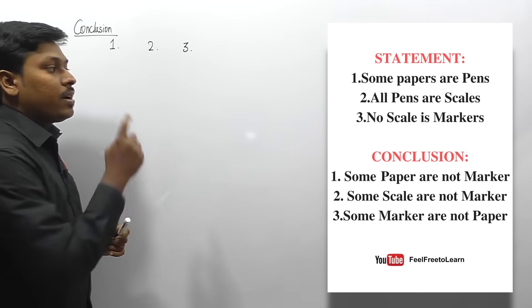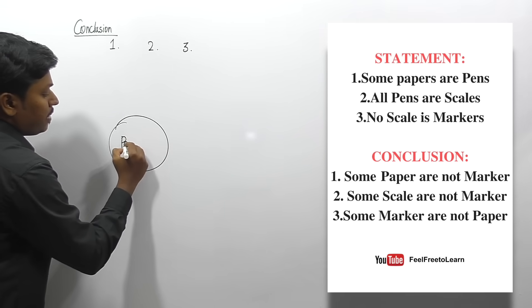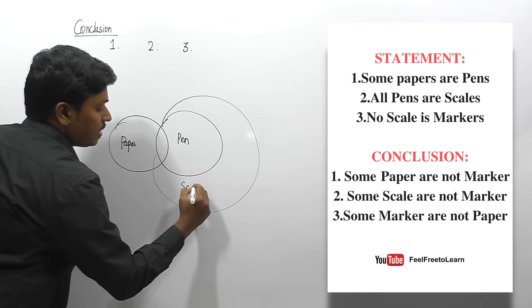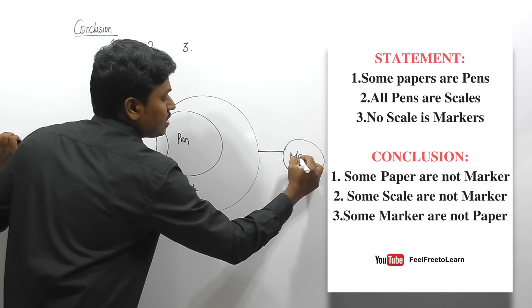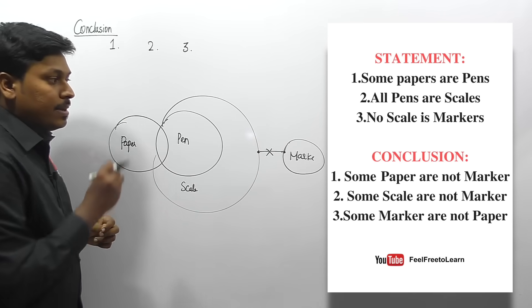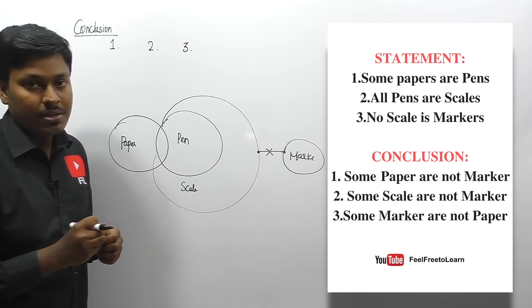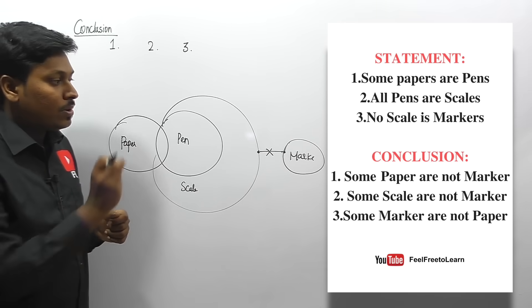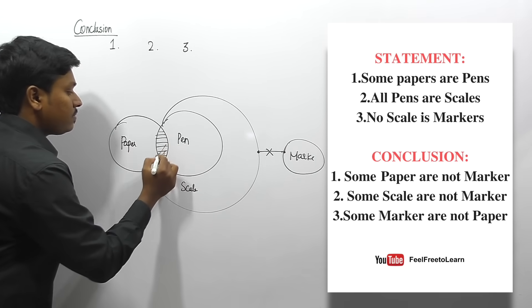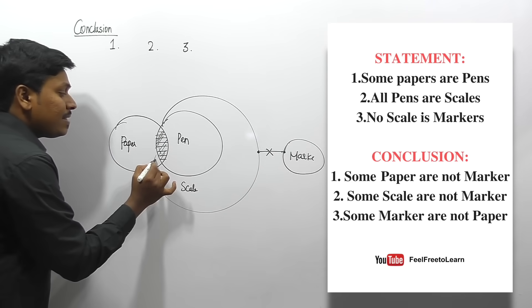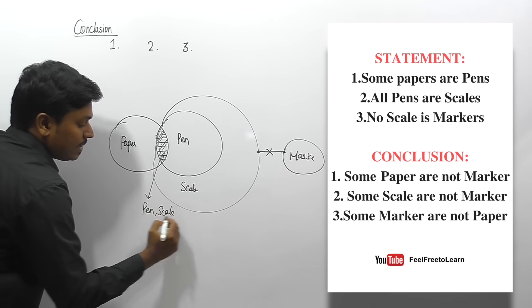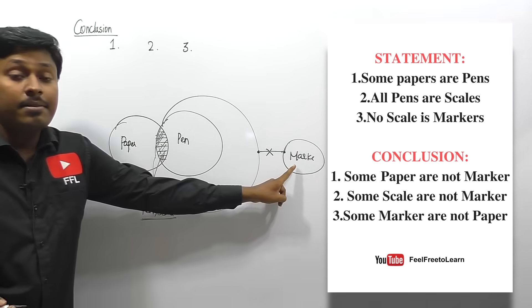Question one: statements are — some papers are pen; all pens are scale; no scale is a marker (no connection between scale and marker). We have drawn the Venn diagram. Conclusion one is 'some paper are not marker.' For a 'some not' conclusion, read the first two words: 'some paper.' Some paper will be the region where paper overlaps with pen and scale.